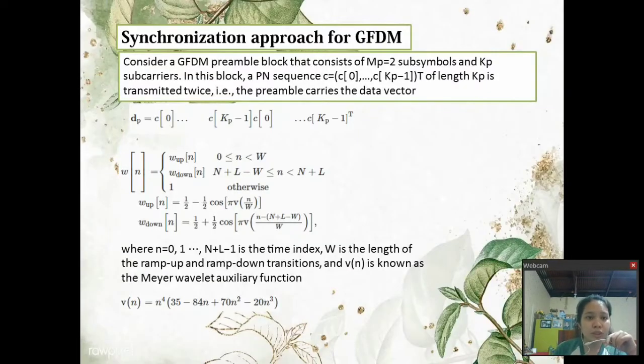Next is the synchronization approach for GFDM. Consider a GFDM preamble block that consists of MP equals two sub-symbols and KP sub-carriers. In this block, a PN sequence C equals C of 0 up to C of KP minus 1 times T of length KP is transmitted twice.